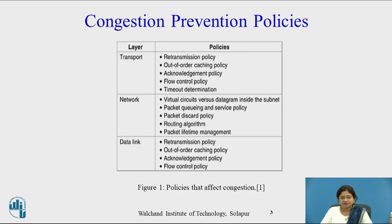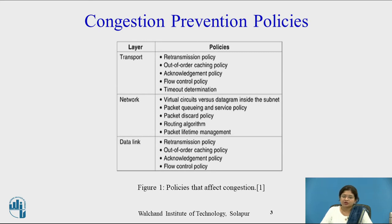I will start from the bottom layer, that is, the data link layer. The data link layer provides congestion prevention policies like transmission policy, out-of-order caching policy, acknowledgement policy, and flow control policy. The network layer provides virtual circuit subnet, packet queuing and service policy, packet discard policy, routing algorithm, and packet lifetime management policy.